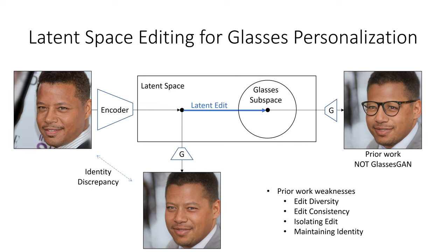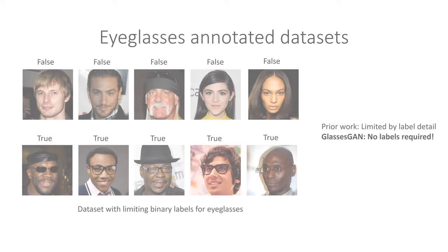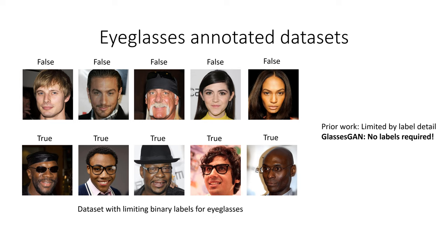Unable to learn the organization of the glasses subspace, prior work typically has low edit diversity, inconsistent edits, and entangled edits. Furthermore, identity change during editing is a common problem in prior work. Many of the limitations of prior work were due to their reliance on datasets with simple binary labels. Limited by the detail of the labels, these methods were typically constrained to basic edits that add or remove glasses.